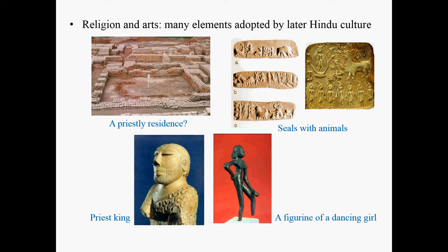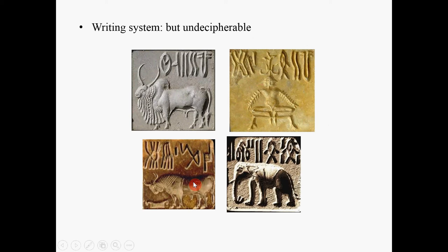This bronze figure is believed to show a dancing girl. Many of those cultural and religious elements were also found in later Hindu culture. For example, in Hinduism there is a god called Shiva, and people believe that in the Indus Valley they have found a prototype image showing the origin of Shiva as a deity within Hinduism. There is also a writing system in Indus Valley civilization — on these seals you can see some kind of script — but nobody has been able to decipher what it means.